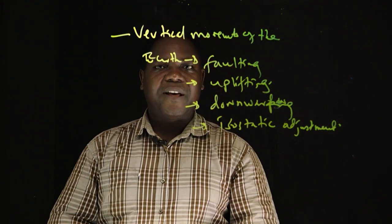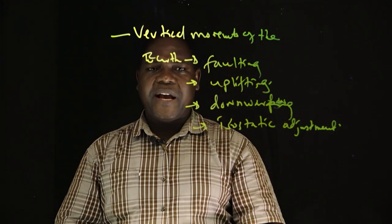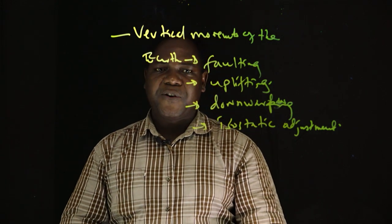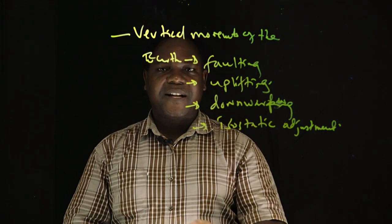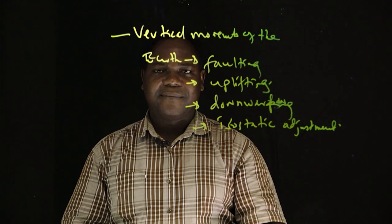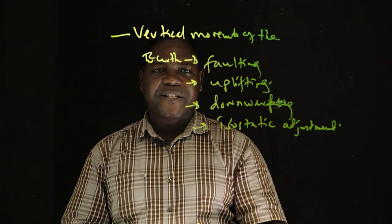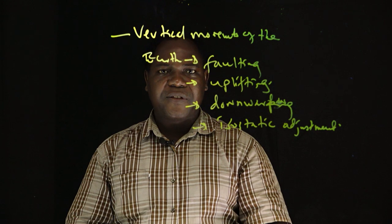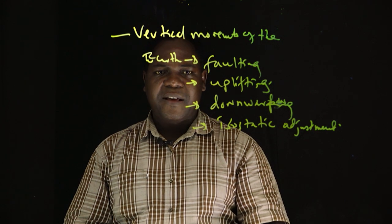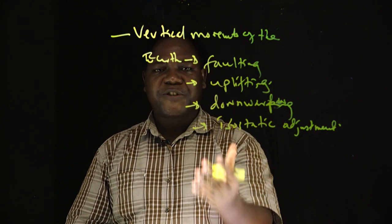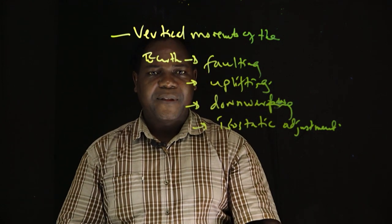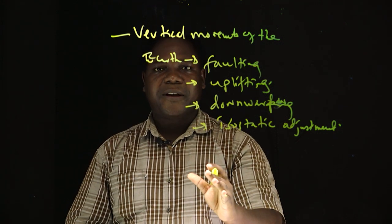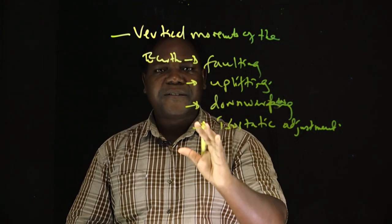On the earth's surface, we are able to see mountains, we are able to see lowlands, we are able to see flat surfaces. Did we ever ask ourselves as human beings on the planet earth what has really been the source of all this we see? It is because the earth is very dynamic — the earth is in movement.